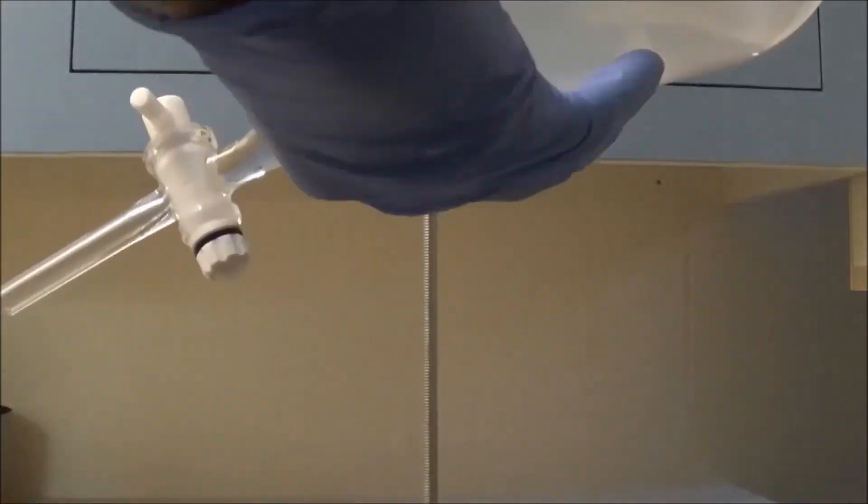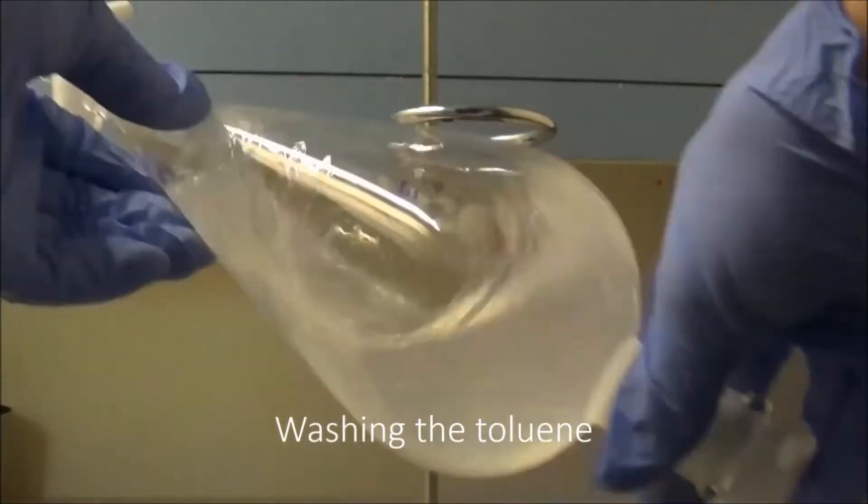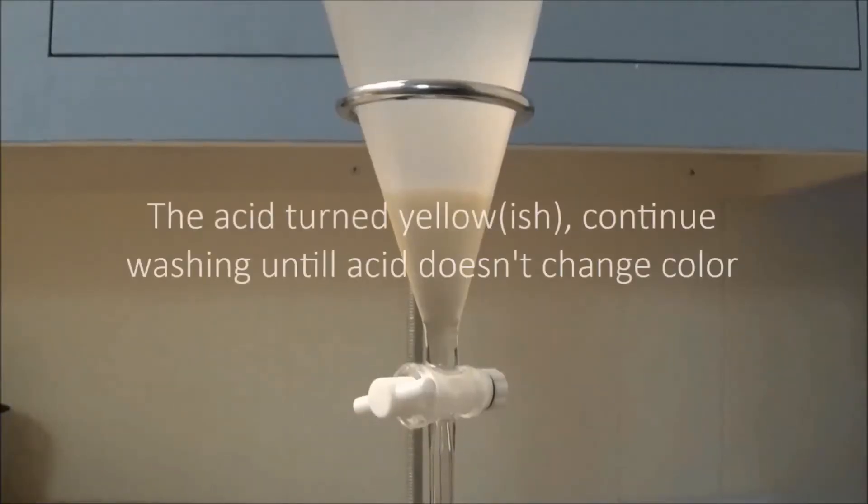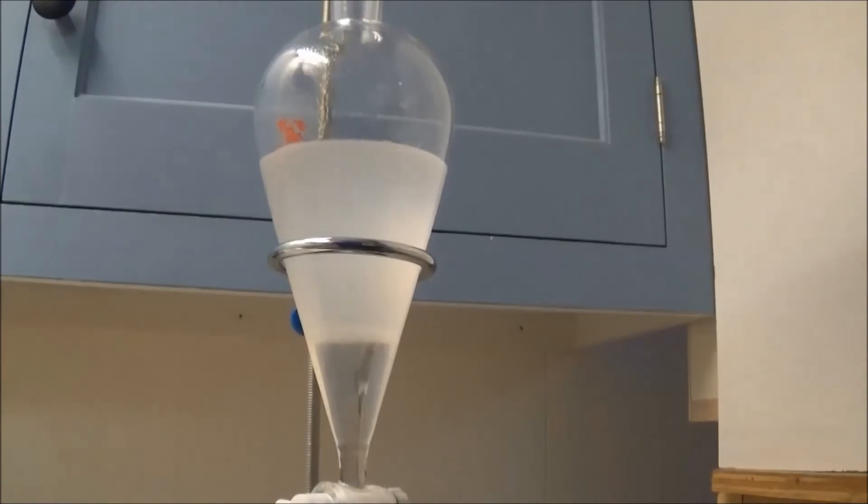The separatory funnel was then shaken well to wash the toluene. This washing was continued with fresh acid until the acid didn't turn yellow after shaking. This was another two times in my case.